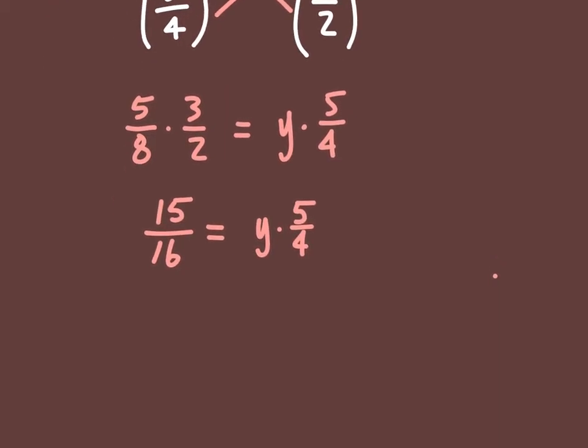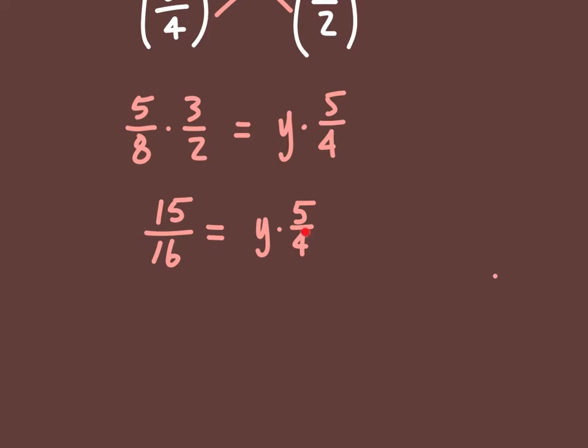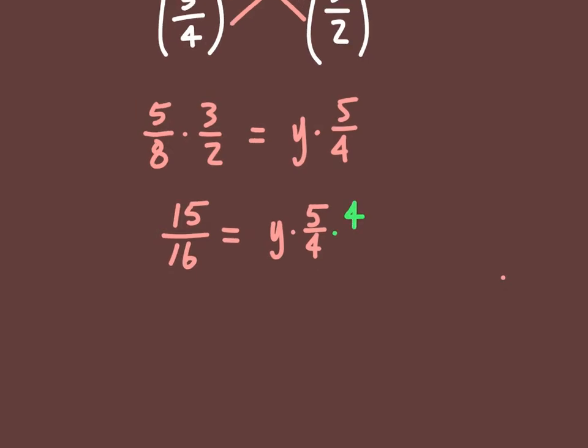And so, the next thing we want to do to solve this is to divide both sides by 5 fourths. Another way to do that is to multiply by the reciprocal. So, typically we don't—that's that keep-change-flip thing. We don't normally divide by fractions. We want to multiply by the reciprocal. So, multiply both sides by 4 fifths.